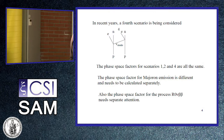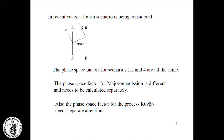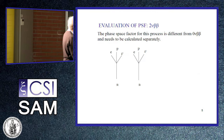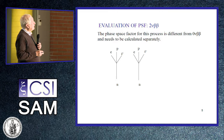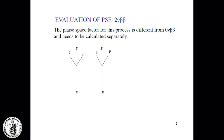The phase-space factor for resonant capture needs separate attention. Also, since the two-neutrino process happens at the same time as the zero-neutrino process, we need to calculate the phase-space factors for two-neutrino double beta decay, because this is different from zero-neutrino and therefore needs to be calculated separately. For two neutrinos, it's like calculating two successive beta decays.